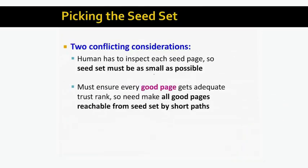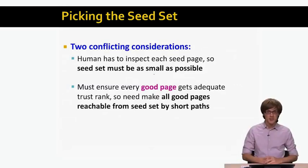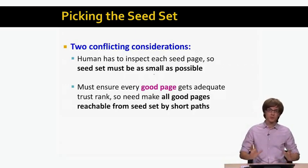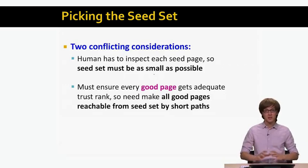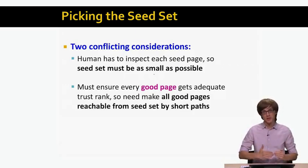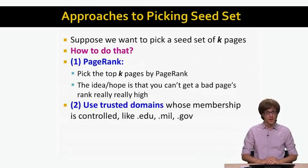How do we pick a seed set in practice? There are two conflicting considerations. We want to make the seed set as small as possible because human labeling of trusted pages is expensive. On the other hand, we want it as large as possible to cover all good pages on the web. Ideally we would put every non-spam page in the seed set, but that would make it huge. The question is how to balance these two conflicting goals.